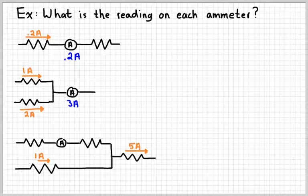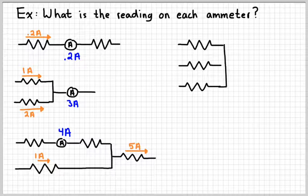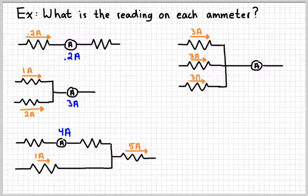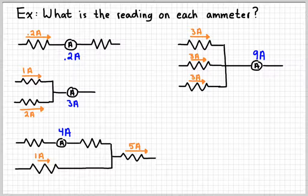Let's look at a slightly more complicated example. Suppose that the resistor on the right has five amperes of current and the resistor on the bottom has one ampere. In order to add something to one to get five, that current has to be four amperes. And in another circuit, three amperes plus three amperes plus three amperes will be nine amperes.